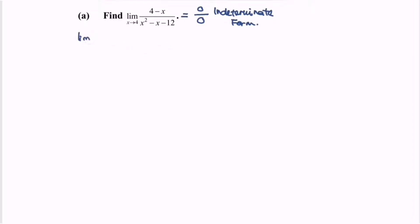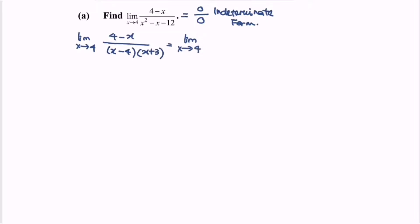So the limit when x approaches 4 for the function (4 minus x) over — we factorize the denominator, and we will have (x minus 4) multiplied with (x plus 3). We can factor the negative from the numerator, giving us negative (x minus 4). Notice that we have common terms, so we can simplify.